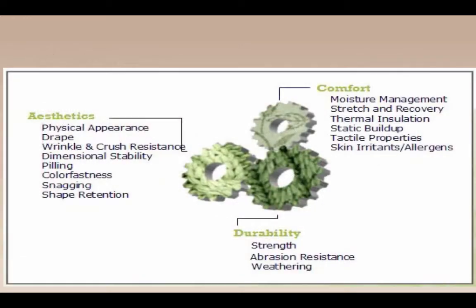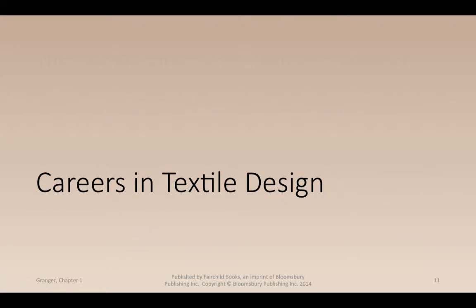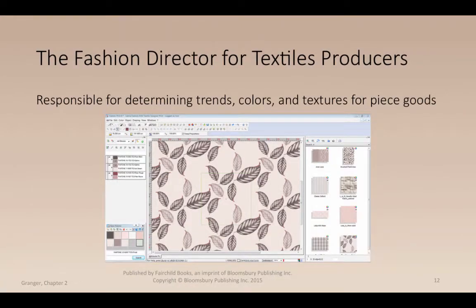There are three main performance properties in textiles: aesthetics, comfort, and durability. Aesthetics covers physical appearance, drape, wrinkle and crush resistance, dimensional stability, pilling, colorfastness, snagging, and shape retention. Comfort includes moisture management, stretch and recovery, thermal insulation, static buildup, tactile properties, and skin irritants. Durability covers strength, abrasion resistance, and weathering.